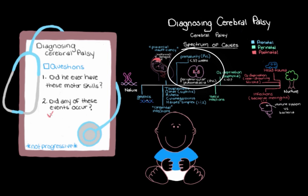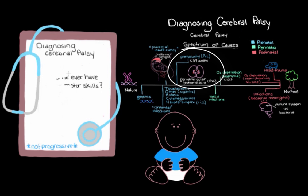Let's say we find out that our child was actually born prematurely — at 31 weeks instead of the normal 40 weeks gestation. Since prematurity increases the chance of a baby developing cerebral palsy, we'll definitely consider it as one of the possible explanations for his delayed motor development. But not all premature babies have cerebral palsy, so we need to look for more signs before we can settle on that diagnosis.